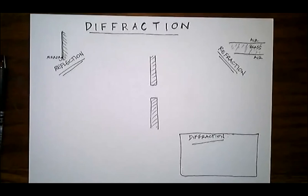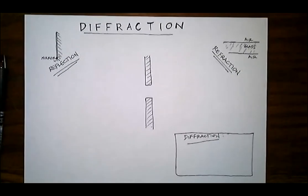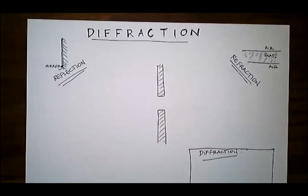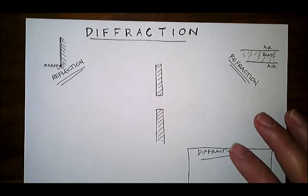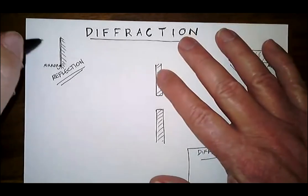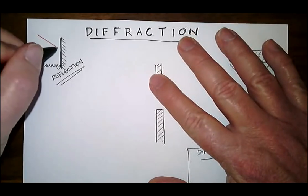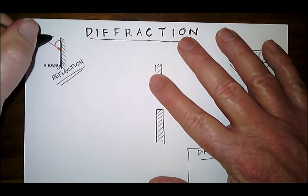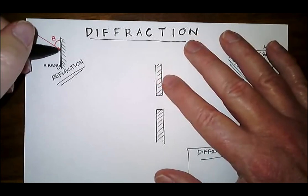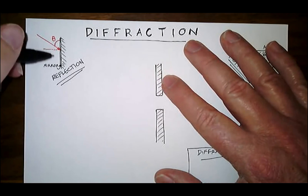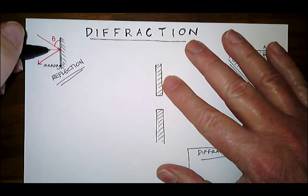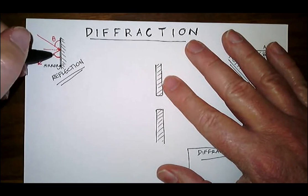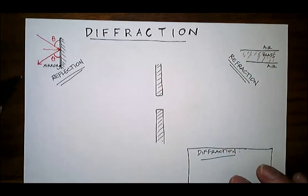Diffraction is going to occur in any kind of wave — this could happen in sound waves, light waves, and water waves. It's a different phenomenon from reflection, which basically says that if a wave comes in at a certain angle — let's call that theta — and I draw a line perpendicular to the surface, that wave will reflect on the opposite side of that middle line at the same angle. So whatever angle you come in at, you're going to leave at the same angle. That's reflection.